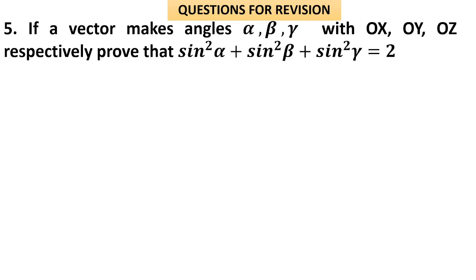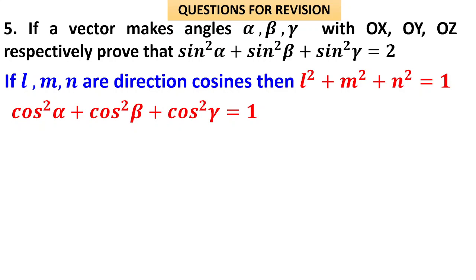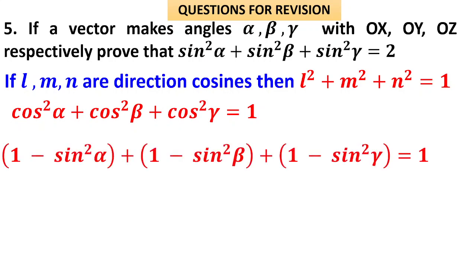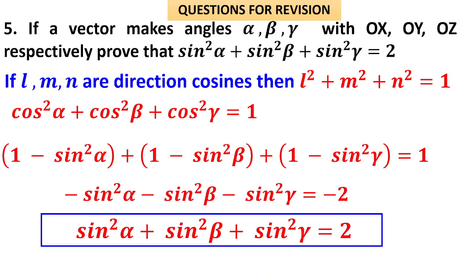Question 5: If a vector makes angles α, β, γ with the coordinate axes OX, OY, OZ, prove that sin²α + sin²β + sin²γ = 2. We know l² + m² + n² = 1, i.e., cos²α + cos²β + cos²γ = 1. Substituting cos²α = 1 − sin²α, cos²β = 1 − sin²β, cos²γ = 1 − sin²γ and adding: 3 − (sin²α + sin²β + sin²γ) = 1, so −(sin²α + sin²β + sin²γ) = −2. Multiplying throughout by −1: sin²α + sin²β + sin²γ = 2.